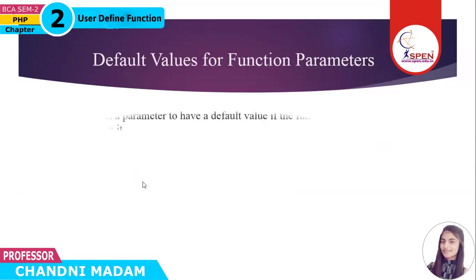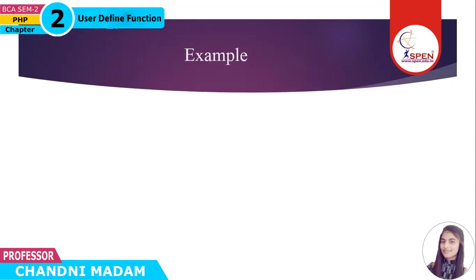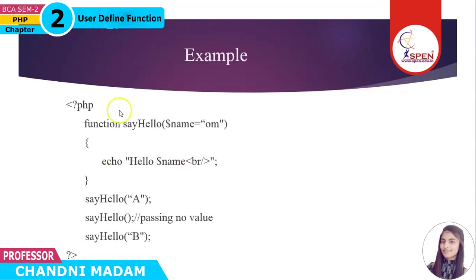Next is default values for function parameters. PHP allows you to define C++ style default argument values. In such a case, if you don't pass any value to your function it will use the default argument value. Here is an example — a function named sayHello has one argument with a default value of 'ohm'. If we don't pass any argument to sayHello it will take the default argument 'ohm'.